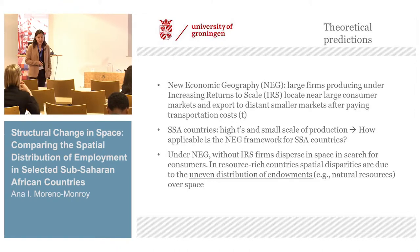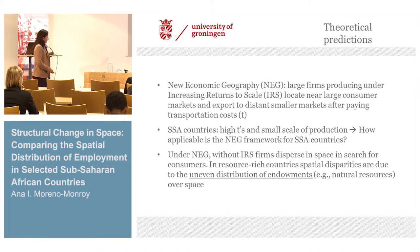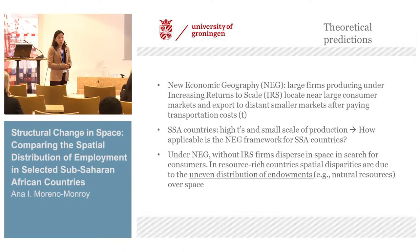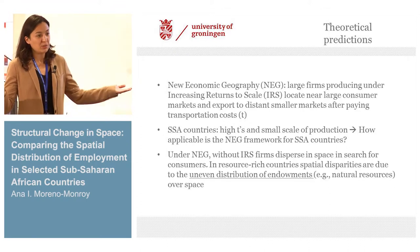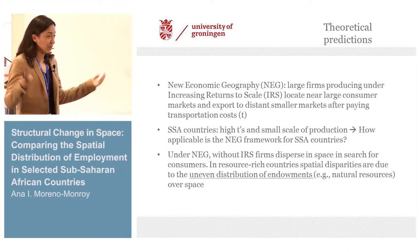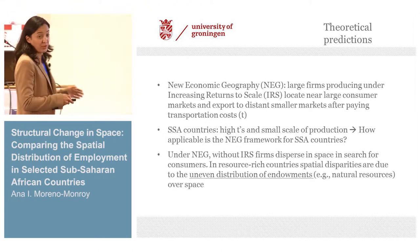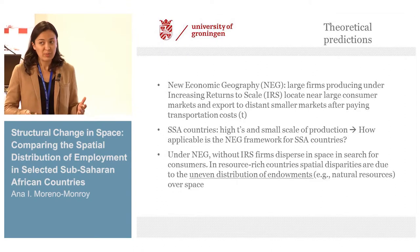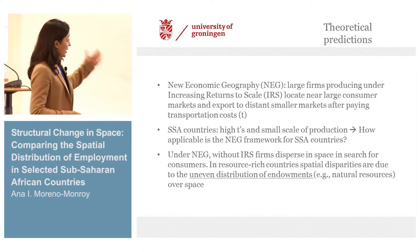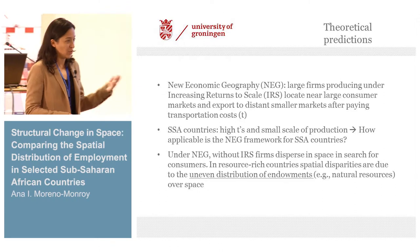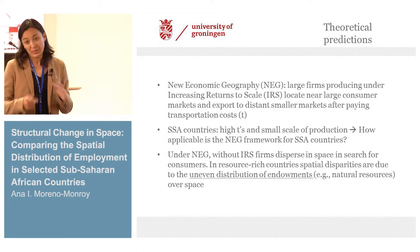I try to trace back models that may apply better for sub-Saharan African countries. For the conditions described — high transportation costs and small scale of production — NEG's prediction is simply that firms will disperse over space, with no agglomeration stemming from increasing returns to scale. For resource-based countries in particular, the prediction is that all distribution of employment over space is explained by the uneven distribution of endowments, such as immobile labor or natural resources, and not by agglomeration economies.